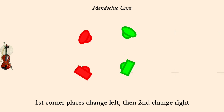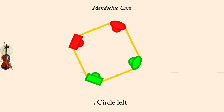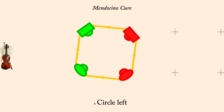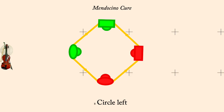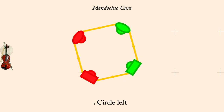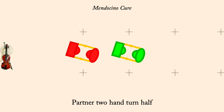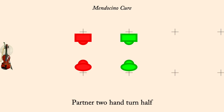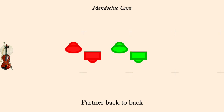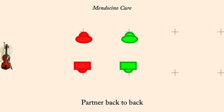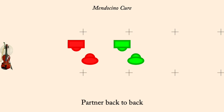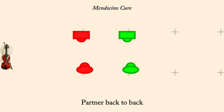Circle left. Partner two-hand turn half. Partner back-to-back. Partner two-hand turn half.